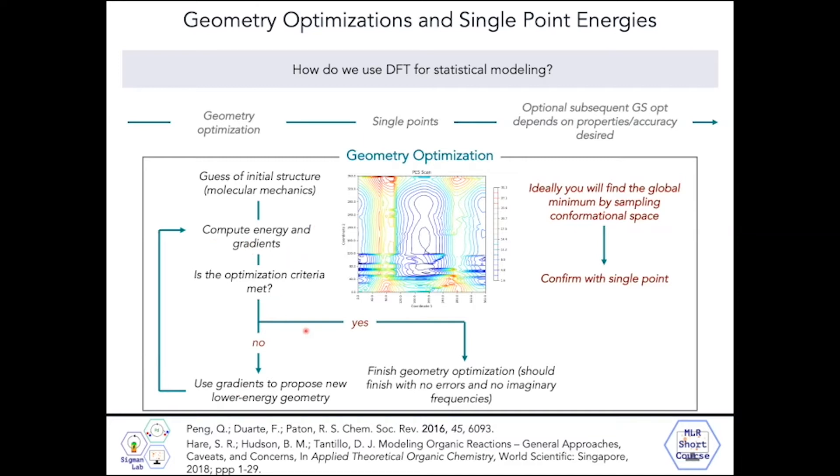But if the optimization criteria were met, then the geometry optimization will finish. This should finish with no errors and no imaginary frequencies, which would indicate that it's not at a true minimum. Ideally, you will find the global quantum mechanical minimum by sampling the conformational space.